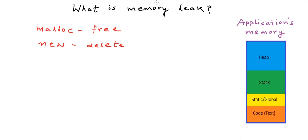Memory leak is a situation when we get some memory on the heap and do not free it when we are done using it. So our application is actually holding on to some unused memory on the heap. We will try to understand why we call this a memory leak, and why it only happens due to improper use of the heap, through one simple program.